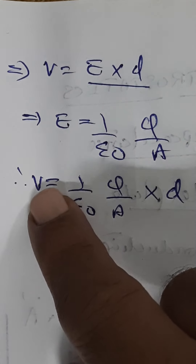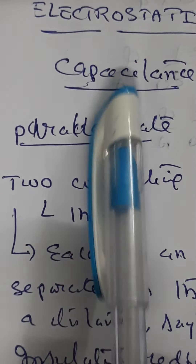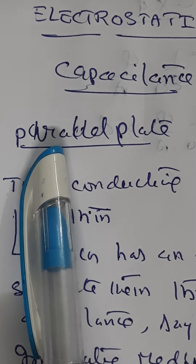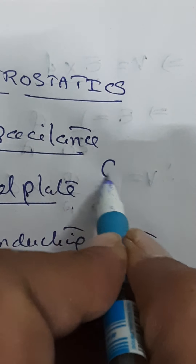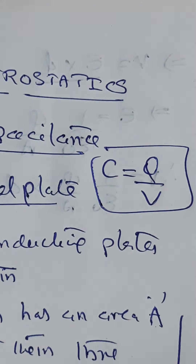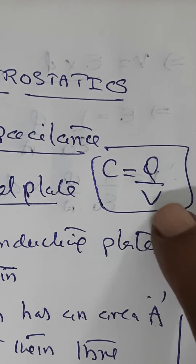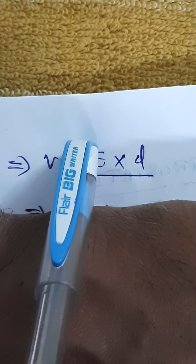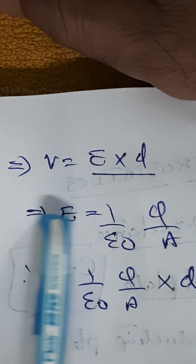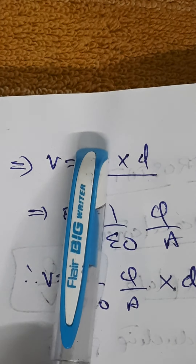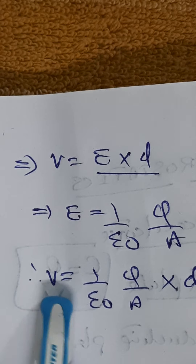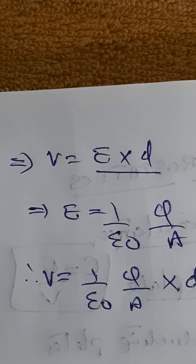The reason we calculated potential is that our basic goal is to find the capacitance C of a parallel plate capacitor, where C equals Q by V. To find C, we need V; to find V, we need E. We already obtained E, which we substitute to get V, and then compute capacitance.